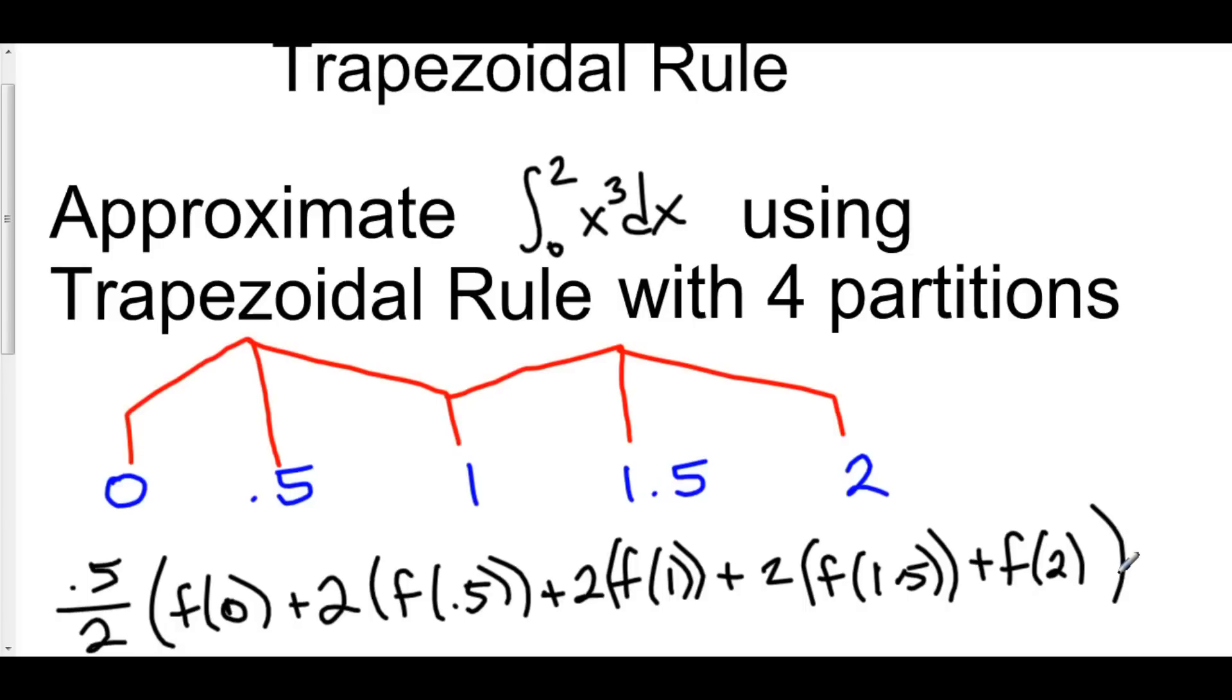And this is the formula for trapezoidal rule. Note that we have h over 2. My exterior legs, namely f of 0 and f of 2 only have a 1 in front of it, and everything in the middle, my interior columns, are all multiplied by 2.